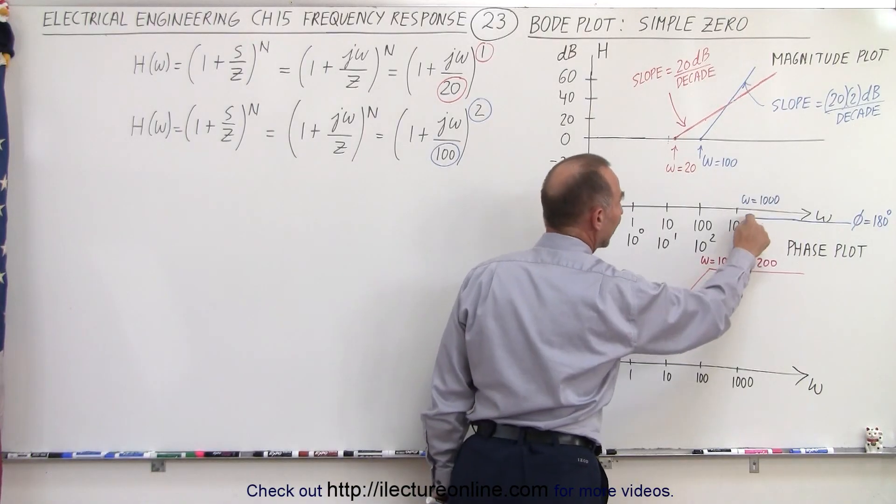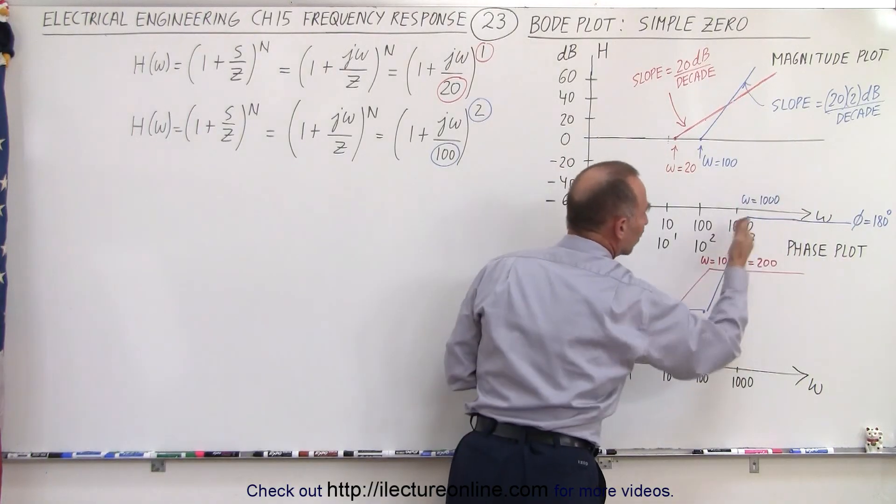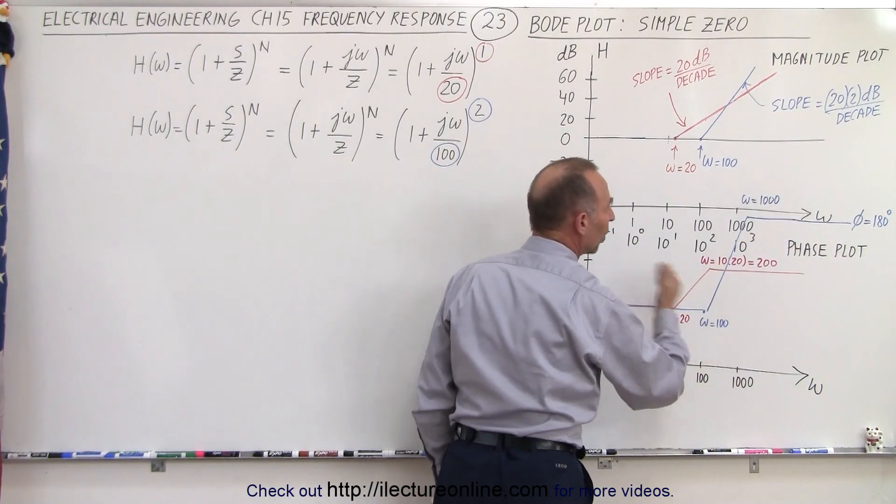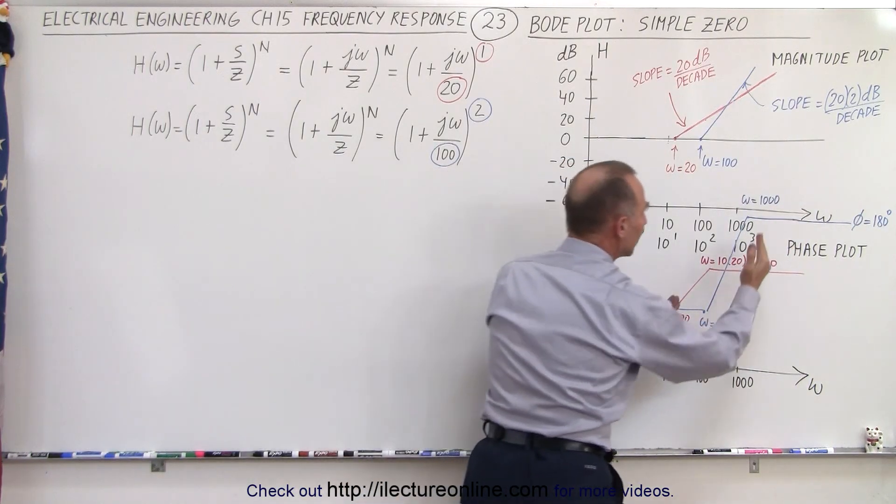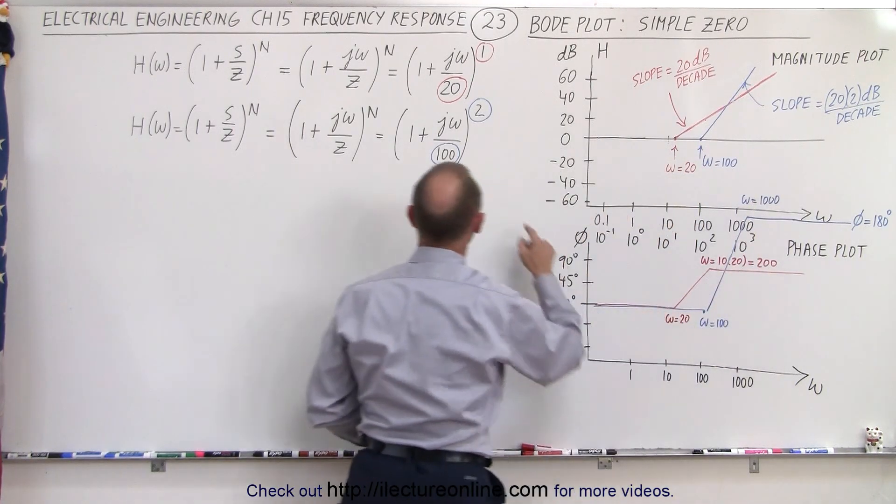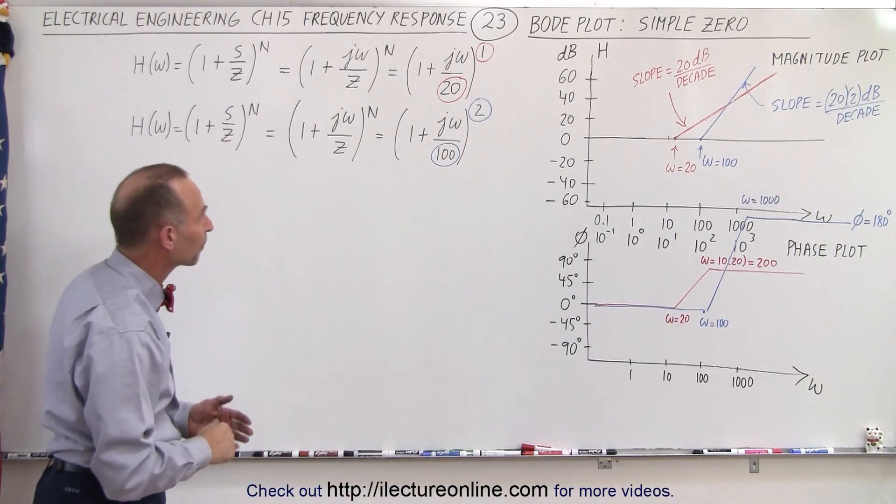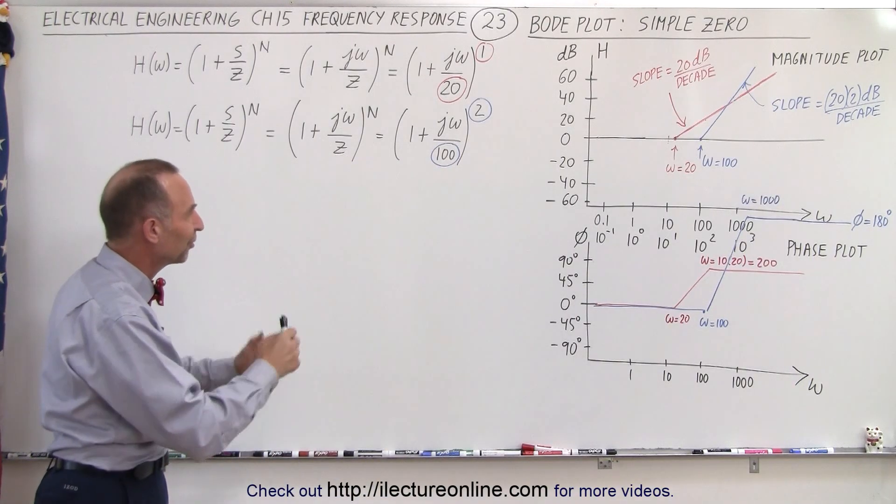So we go from zero to 180 degrees when we have a double zero, all in the distance from omega equals 100 to omega equals a thousand, ten times the point where the simple zero starts.